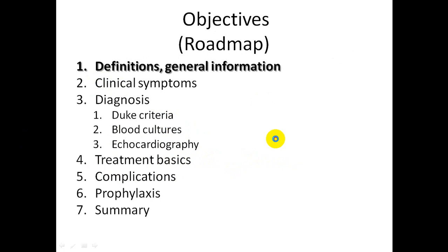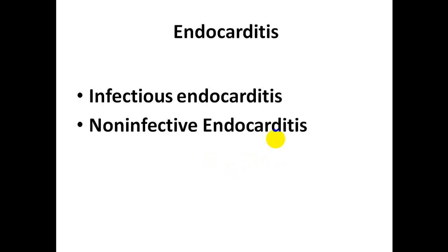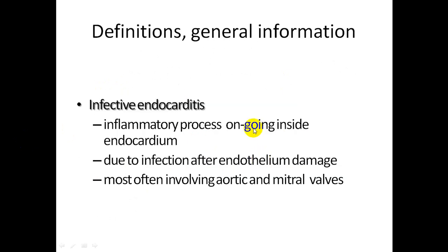Endocarditis is either classified as infectious endocarditis — acute or chronic — or non-infective, where there is a nidus or vegetation but no infective agent. Infective endocarditis is mainly bacterial, though other rare organisms can be responsible. It is an inflammatory process ongoing inside the endocardium due to infection after endothelial damage.